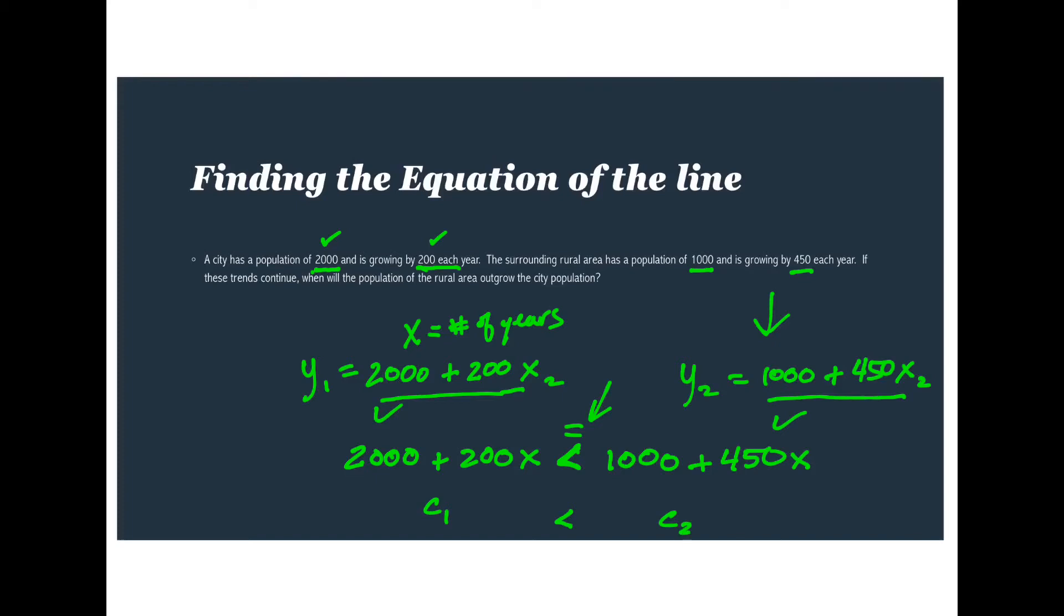And we can solve this by solving for X. So we'll start off with getting the X's to one side. I'm going to subtract 200X here. So that goes away. And then we'll move the numbers. We'll subtract 1,000 over here. So that gives me 1,000 less than 250X. And if we divide both sides by 250, we get X greater than, well it's a less than symbol but we're reading it backwards, 4. So in the fourth year, city 2 will be larger than city 1.